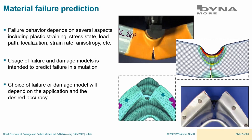The choice of model depends on many things, but globally it depends a lot on your application — whether it's crash, forming operations, or something else — and on the desired accuracy. If you want more accuracy, you need more sophisticated models. If you're okay with less accuracy, simpler models can work.